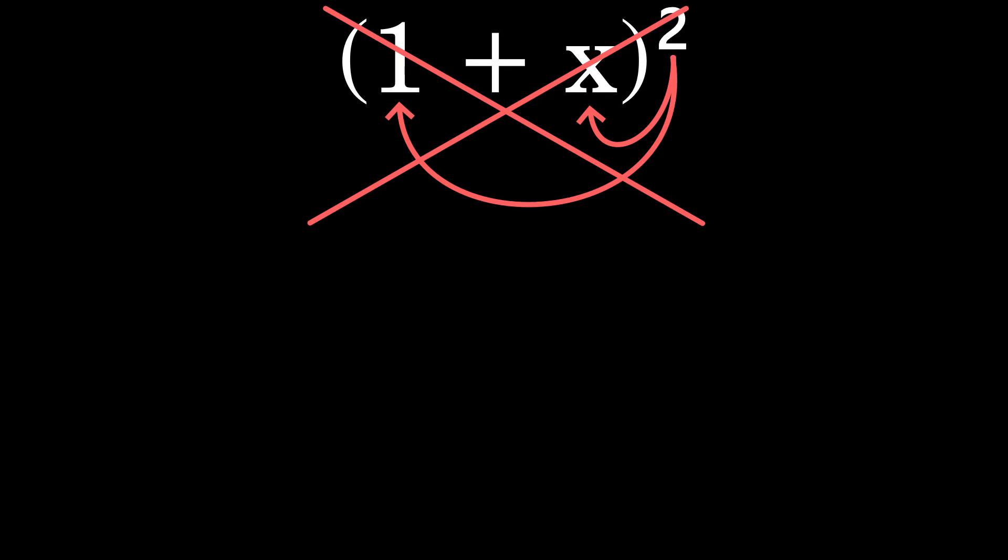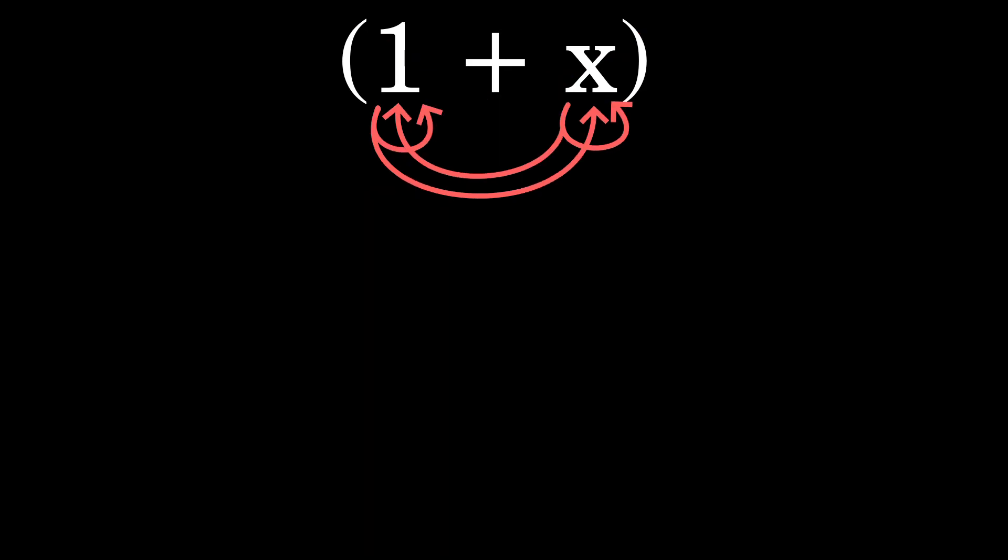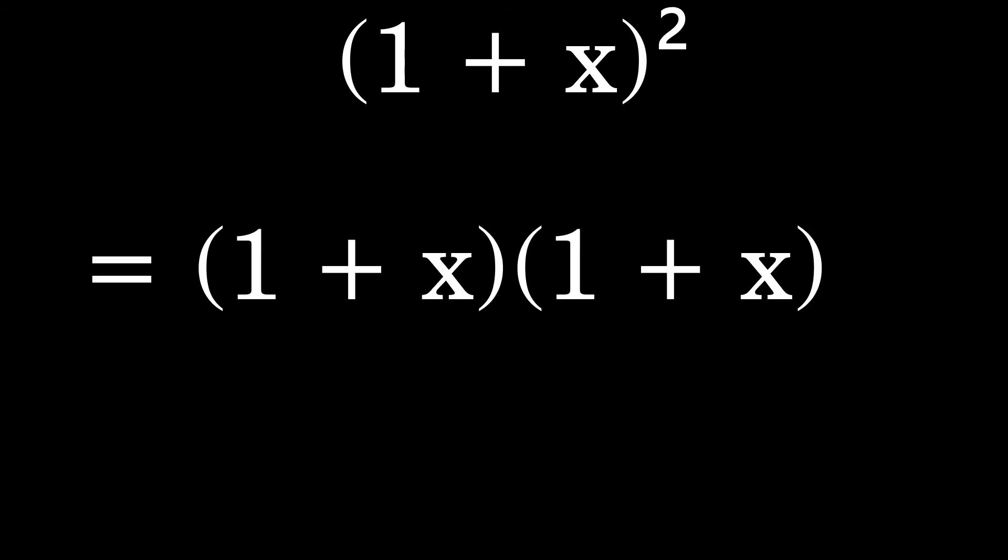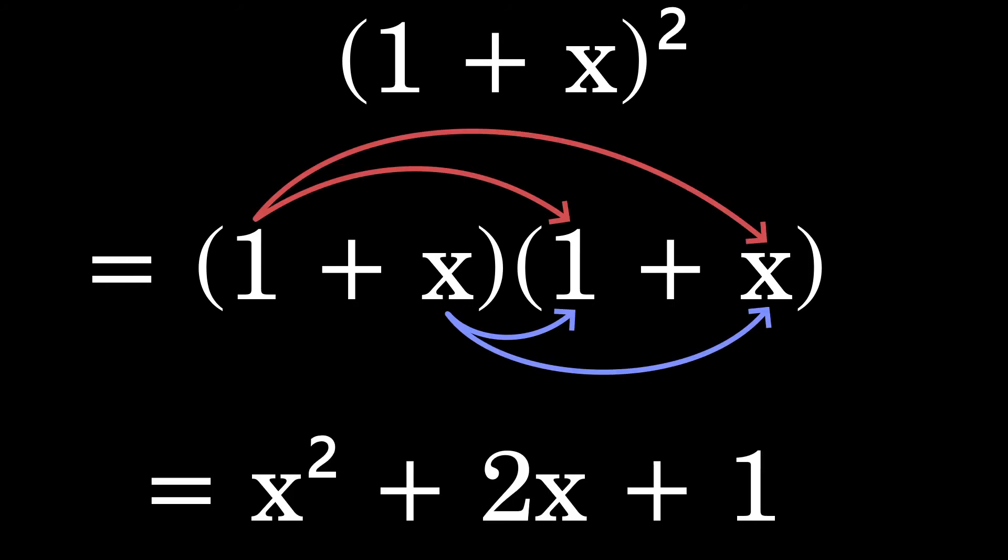So instead you have to recognize that it's a group multiplied by itself in this case. Remember how x squared is x times x? This is the same concept. Expanded it looks more like x plus 1 times x plus 1. Now we can use the distributive property to get x squared plus 2x plus 1.